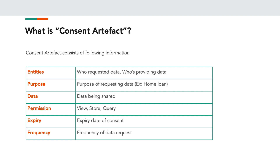So how does a consent artifact look? When the account aggregator receives a request from a financial information user, they prepare a consent artifact. It contains: the entities involved (who requested the data and who is providing the data — the FIU and FIP); the purpose of the data request (e.g., a home loan or a service); what financial information is being shared; what permission the FIU has on that data; when the consent expires; and at what frequency the FIU can request data from the FIP. The end individual can review all of this and then allow the account aggregator to fetch the information. Getting the consent, maintaining it, and ensuring data is passed only after consent is the most important aspect of an account aggregator.